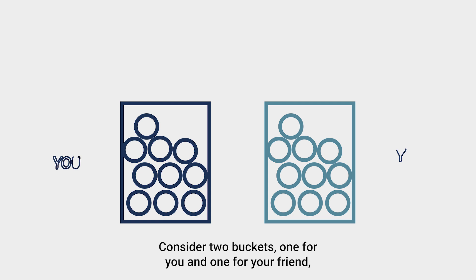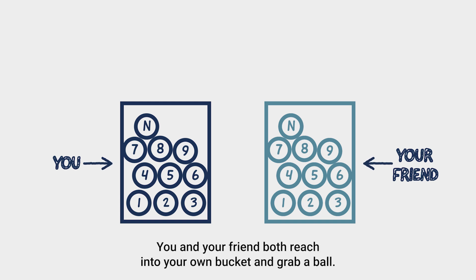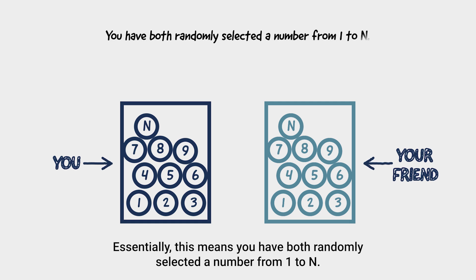Consider two buckets, one for you and one for your friend, each one containing n balls numbered from 1 to n. You and your friend both reach into your own bucket and grab a ball. Essentially, this means you have both randomly selected a number from 1 to n.